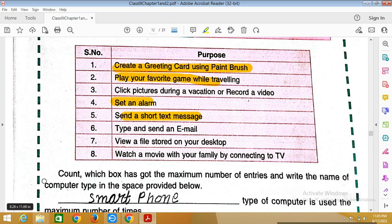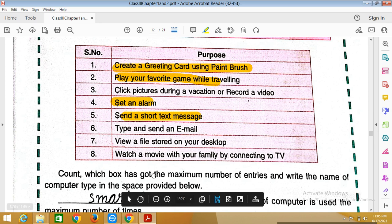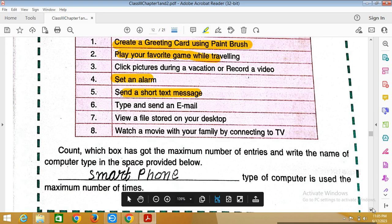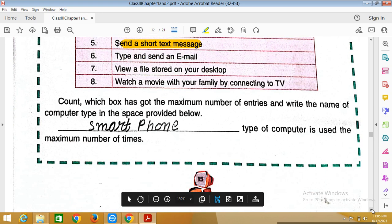Here we have a question: count which box has got the maximum number of entries and write the name of computer type in the space provided. If you see, smartphone has the most entries. So we will write: smartphone type of computer is used the maximum number of times.